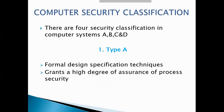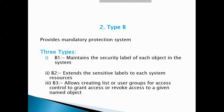Next is computer security classification. There are four security classifications in a computer system: A, B, C, and D. Type A is the highest level. It is a formal design specification and verification technique that grants a high degree of assurance of process security. Type B is the mandatory protection system. It has all the properties of the type C2 system and attaches a sensitive label to each object. It is of three subtypes: B1, B2, and B3.